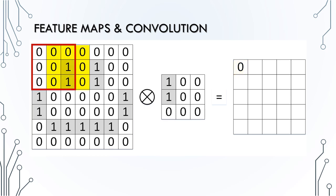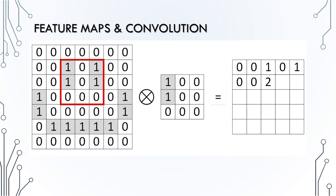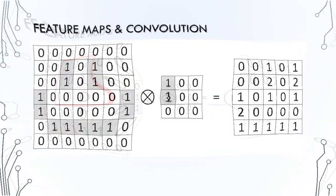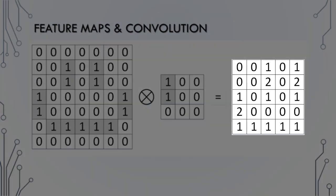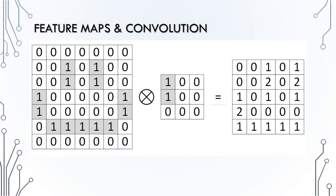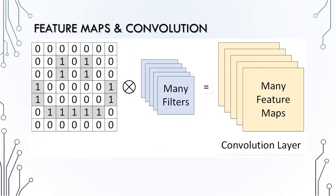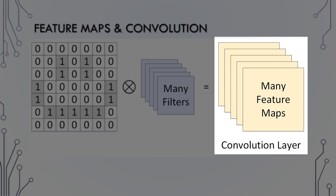We next slide the filter one pixel to the right and find the product with the next 3x3 section. This process repeats until we reach the end of the row, at which time we move one pixel down and again begin applying the filter from left to right. In a later step, there is direct overlap between the two 1s in the filter and the image section, so we record a value of 2 in the feature map. After applying the filter to all 3x3 sections of the image, we successfully fill in all values of the feature map, indicating the degree of overlap between the filter and all sections of the image. We can apply many different filters to the same input image to detect a variety of lines, curves, and shapes. The resulting collection of feature maps comprises the convolution layer.